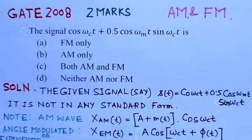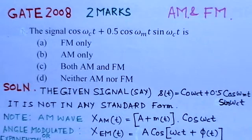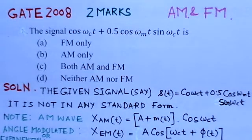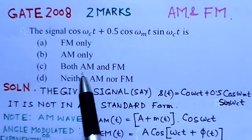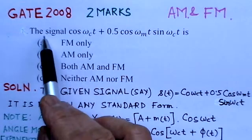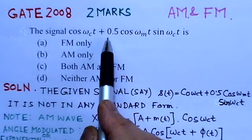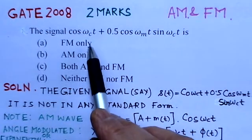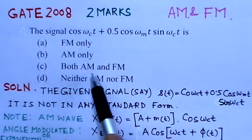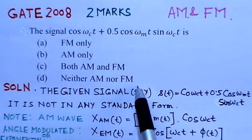The present problem is of GATE 2008 and it is of 2 marks, based on amplitude and phase modulation both. The signal cos(ω_c·t) + 0.5·cos(ω_m·t)·sin(ω_c·t) is: FM only, AM only, both AM and FM, or neither AM nor FM.